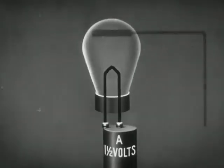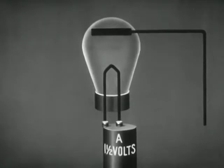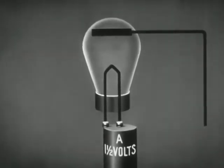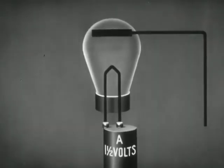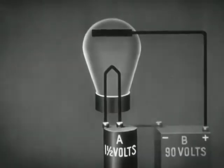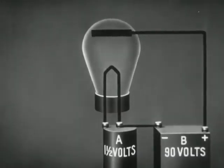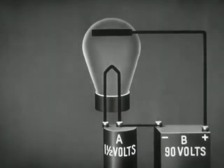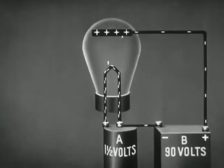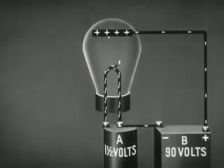Now let us add a second element called the plate. Actually, the plate is a metallic cylinder surrounding the filament. The plate is connected to the positive side of a high voltage battery. Since the plate has a positive charge with respect to the filament, electrons are attracted to the plate.